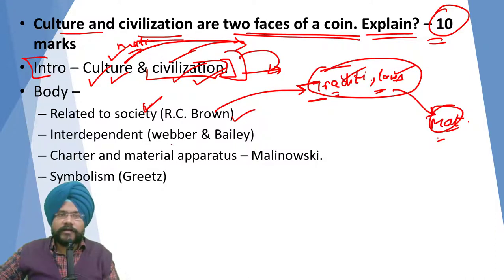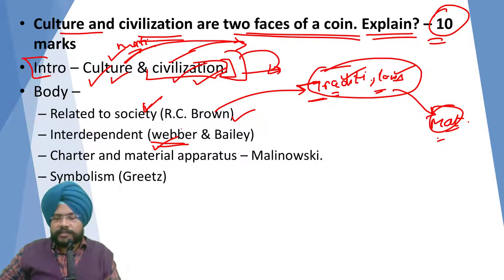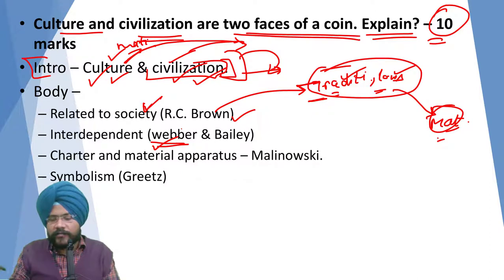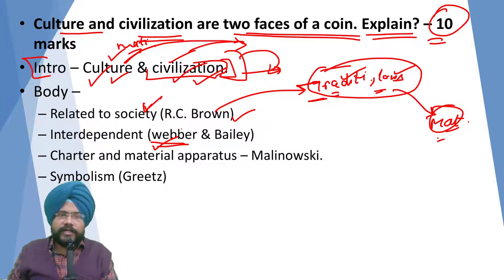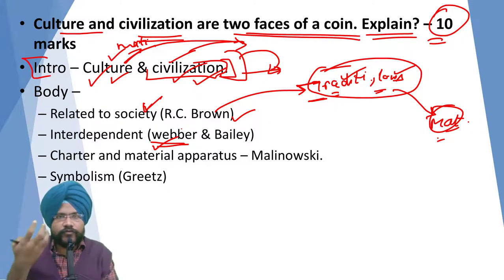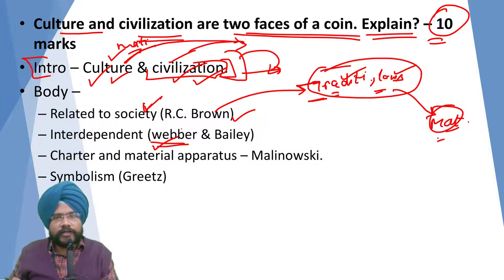Both are also interdependent. For example, Weber gave a critique of Indian Hindu society — that capitalist technology can never flourish in Hindu culture, because Hinduism has a very strong community sense. There is a rigid tradition and idea of community in that culture, so capitalist civilization's technology cannot work there.